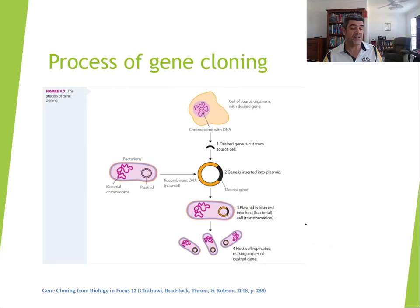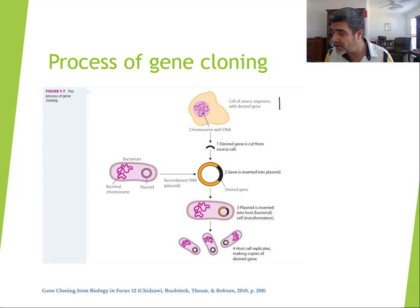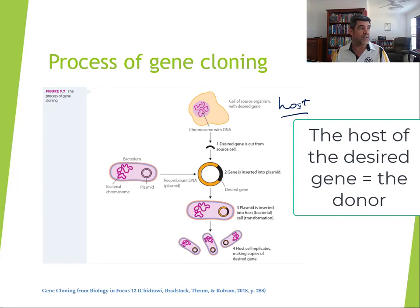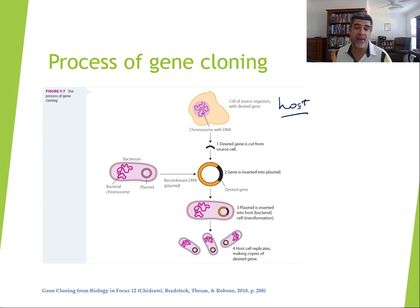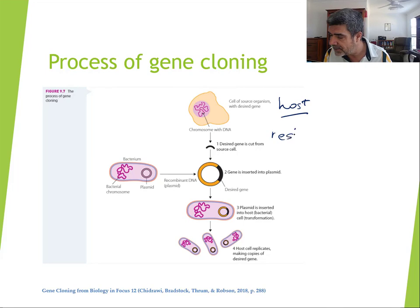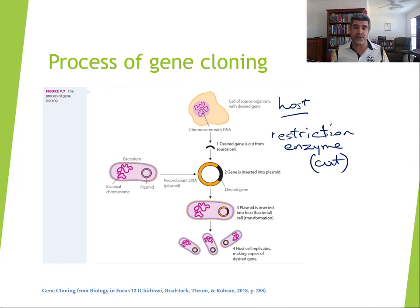So what is the process? This diagram comes from your biology focus book and gives a nice overview of gene cloning. The first thing we want to do is identify the host cell and which gene we're interested in — techniques like CRISPR have a lot to say about this. Once we find the specific gene, we use a restriction enzyme to cut the DNA. When it cuts, it often produces what we call sticky ends — small sections of DNA that make it easier to bond to the same sequence of bases in another piece of DNA.